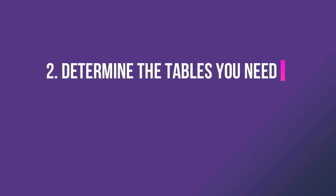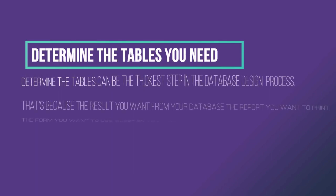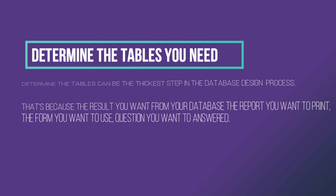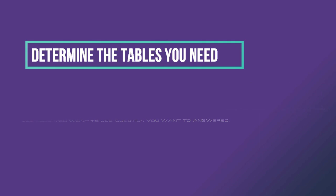The second step is to determine the tables you need. Determining the tables can be the trickiest step in the database design process, because the results you want from your database — the reports you want to print, the forms you want to use, the questions you want to answer — don't necessarily provide clues about the structure of the tables. For example, if I have classes, I will create a table for every class.